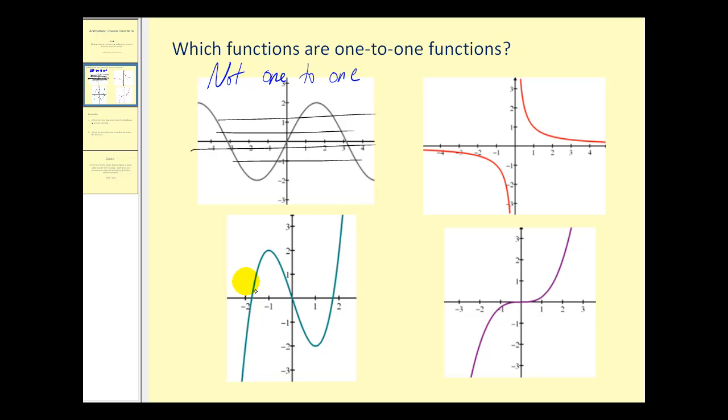For the same reason, this graph is also not one-to-one because these horizontal lines intersect the graph in more than one point.